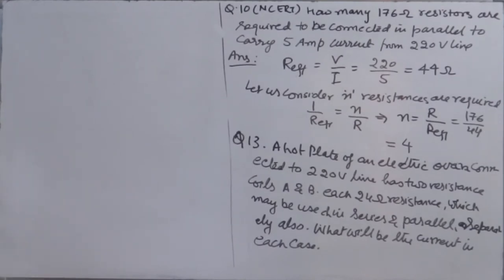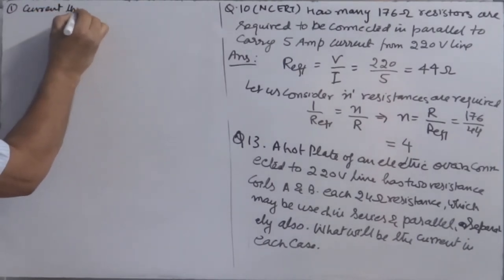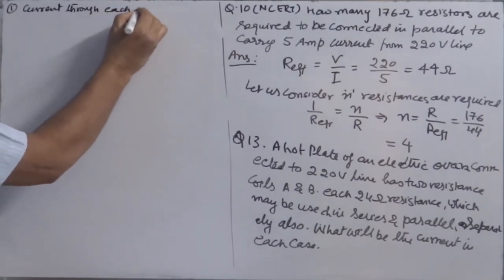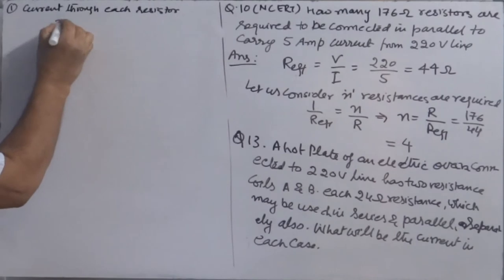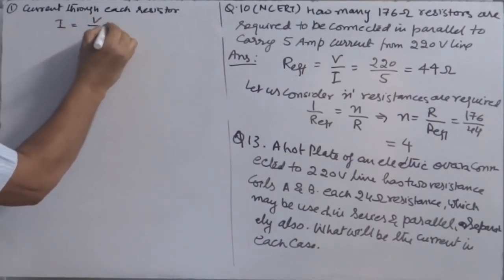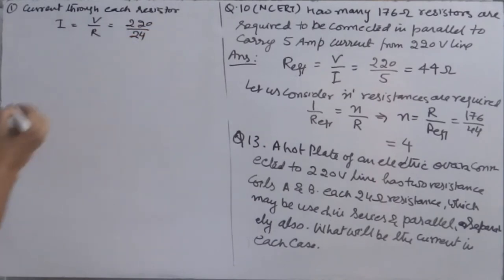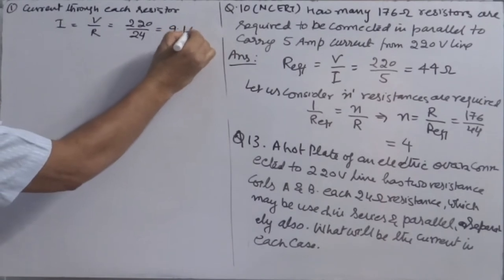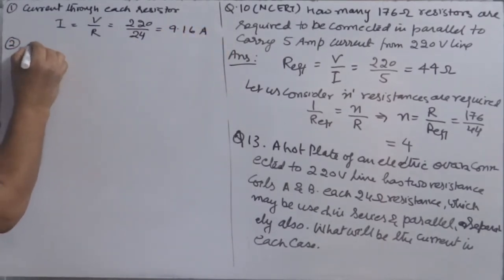Case 1 — used separately: current through each resistor = V / R = 220 / 24 = 9.16 ampere. Case 2 — connected in series: effective resistance = R1 + R2 = 24 + 24 = 48 ohm.